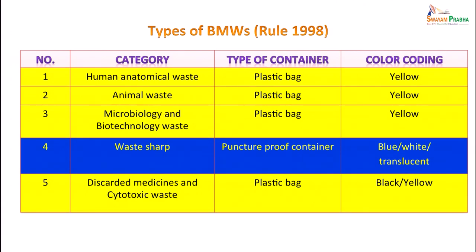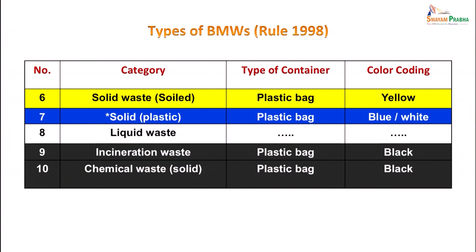Under the earlier rule of 1998, human anatomical waste, animal waste, microbiology and biotechnology waste were all collected in yellow-colored plastic bags. Waste which was sharp was in blue or white translucent puncture-proof containers. Discarded medicines and cytotoxic waste were in black or yellow plastic bags. Solid waste and soiled plastics could be in yellow, blue or white bags. Incineration and chemical solid waste went in black plastic bags.